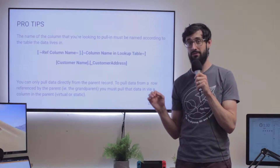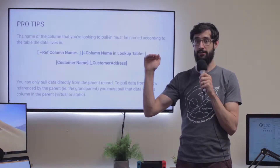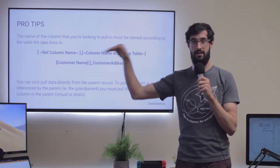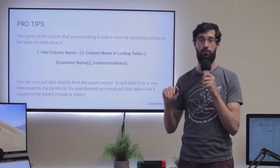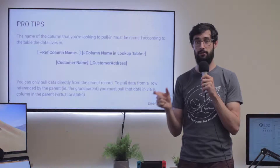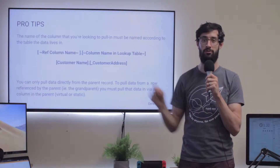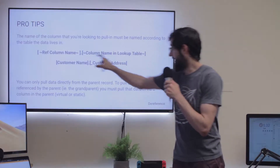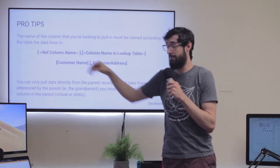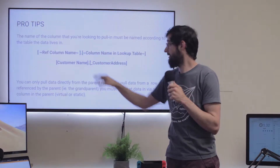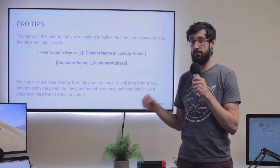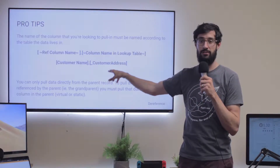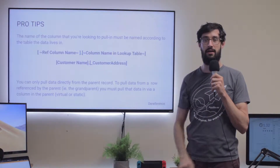Another pro tip is that you can only pull data from the parent record in the table reference relationship. Let's say we have a database that has a customer, that customer has an order, and that order has many order details. If we're creating an order detail record and we want to pull the customer address, we would try to take this expression and say: here's our reference column in the order detail table, here's the name of the column we're looking up in the order table which is the customer, and then have another period and pull out the customer address — kind of a three-step equation.